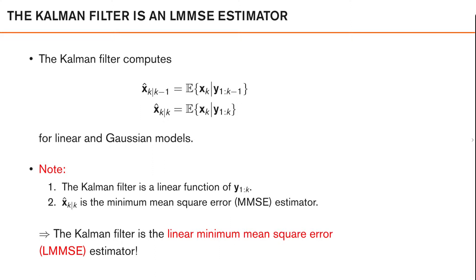To recap, we know that the Kalman filter computes the predicted mean in the prediction step and the posterior mean in the update step, and it does this if we have linear and Gaussian models. With this, we should note two things. First, the Kalman filter is a linear function of the data y1 to k.